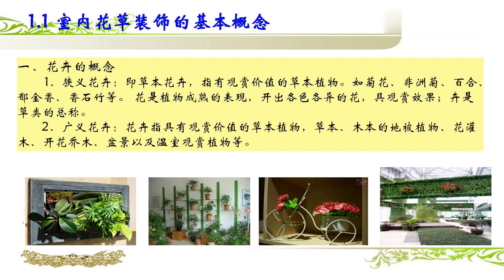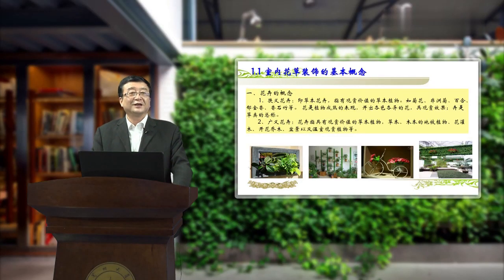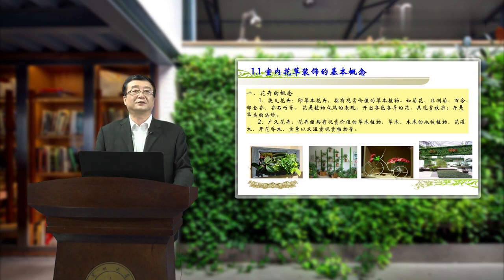第一节：室内花草装饰的概念和功能。我们首先了解一下花卉的概念。狭义的花卉就指的是草本花卉，它是指具有观赏价值的草本植物，比如说菊花、非洲菊、百合、郁金香、香雪竹等等。花是植物成熟的表现，当植物成熟了才会开花结果，开出各色各异的花，具观赏效果。卉就是草类的意思，所以花草和花卉是同样的意思。